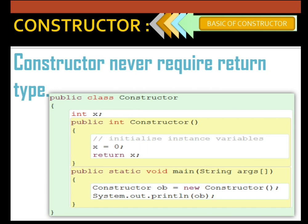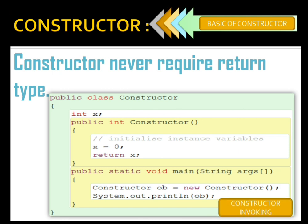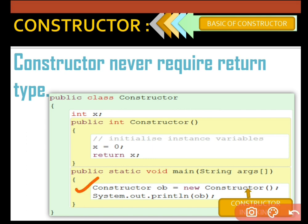Keep in mind: never use any return type with a constructor. If you write one, there are no issues, but it is useless. Moving further: class name 'Constructor', ob is the object, equals to new Constructor with function bracket open close — this is invoking a constructor, meaning the calling of a constructor happens from here. When we create an object, the constructor is called implicitly; we are not supposed to call it manually.